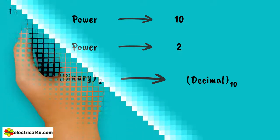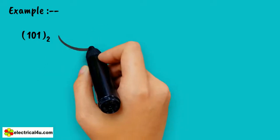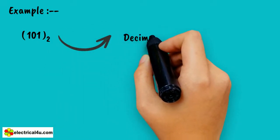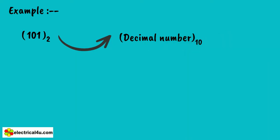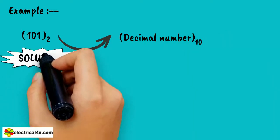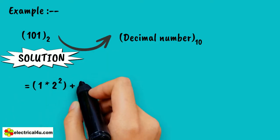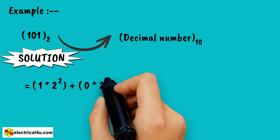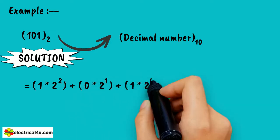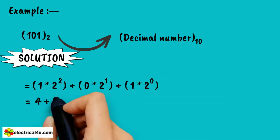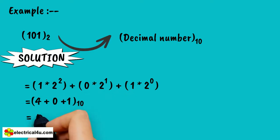Now we can represent a simple example of conversion. Let's take a binary number 101 (base 2) and convert it to a decimal number. The solution is: 1 × 2² + 0 × 2¹ + 1 × 2⁰ = 4 + 0 + 1 = 5 (base 10).